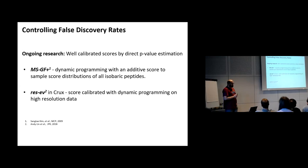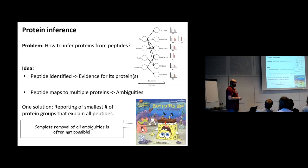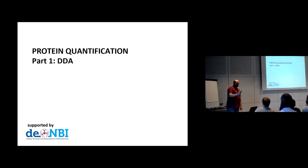The last step is protein inference. You will typically have multiple spectra identifying the same peptide, and peptides mapping to multiple proteins. Each mapping gives evidence for the protein it maps to. If a peptide maps to multiple proteins, do you assign the same evidence level to each, or higher evidence to proteins with more peptides? One approach is to report the smallest number of proteins that explains all the peptides. You can also use quantification data to adjust probabilities. With that, Leon will talk about quantification.